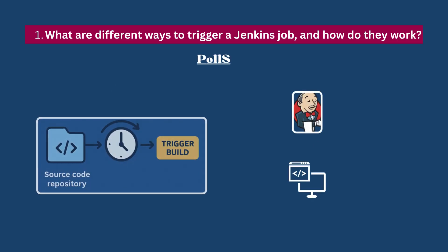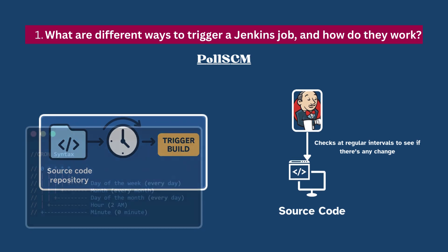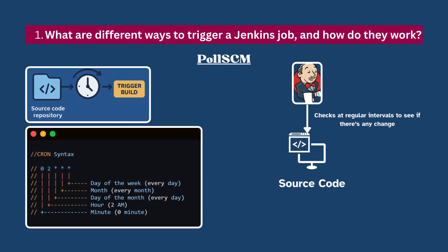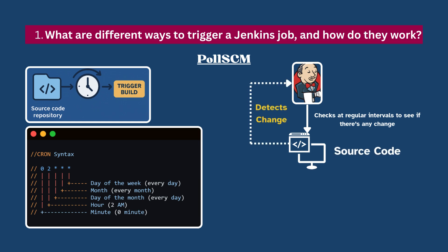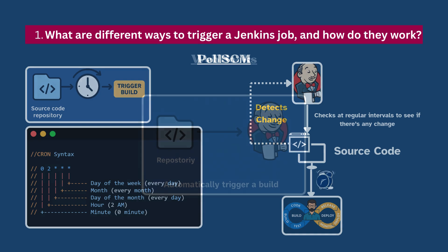Poll SCM means Jenkins checks your source code repository at regular intervals to see if there's any change. You set this up using a Cron-style expression — for example, if you want Jenkins to check every 30 minutes. If Jenkins detects any change during one of those checks, it triggers the pipeline. This method works well, but it still polls the repo even if nothing has changed, so it's a bit heavier on resources.